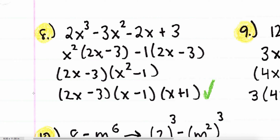Number eight. The GCF of 2x cubed minus 3x squared is x squared, so I yank out x squared, giving x squared times 2x minus three. Then I pull out a negative one from the last two terms — that flips the sign — giving negative one times 2x minus three. The common factor is 2x minus three, so I factor it to the front: 2x minus three times x squared minus one. Since x squared minus one is the difference of squares, it factors into x minus one times x plus one. The final answer is 2x minus three times x minus one times x plus one.